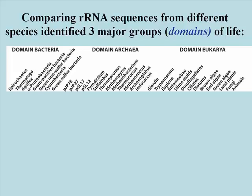By this analysis, all species in the world today can be grouped into three major domains: the bacteria, the archaea, and the eukarya.